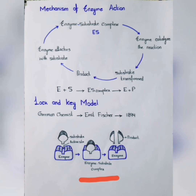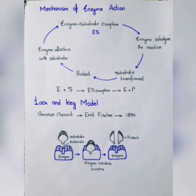This model explains enzyme specificity. The lock and key model explains the specificity of enzyme — every enzyme is shape-specific for its substrate. You can explain the lock and key model with the help of a diagram. The substrate is attached to the active site of the enzyme. The active site is the site where the substrate attaches and the reaction proceeds.